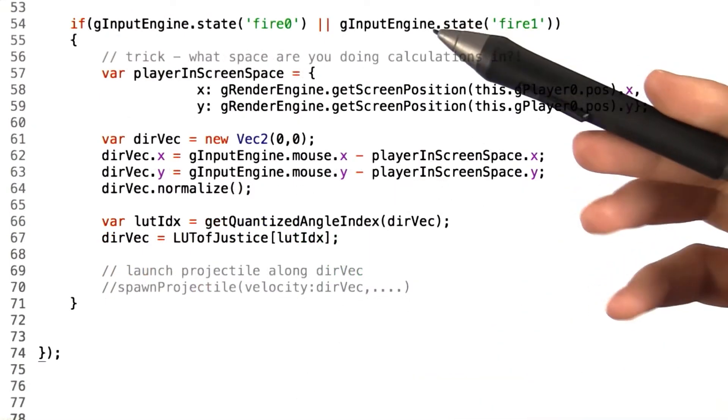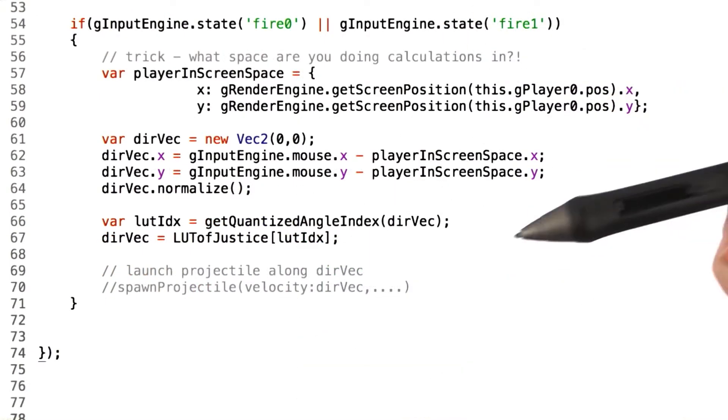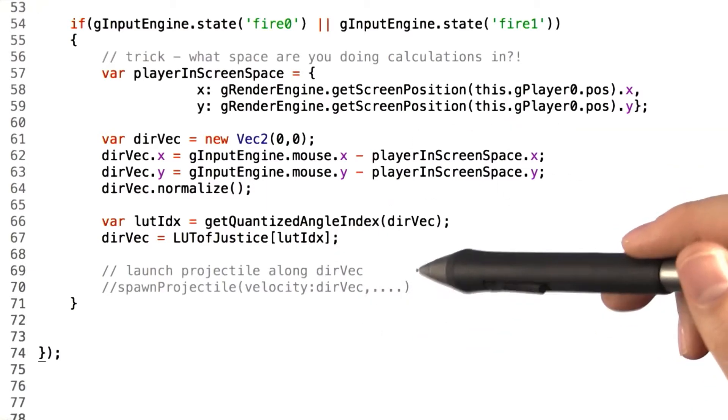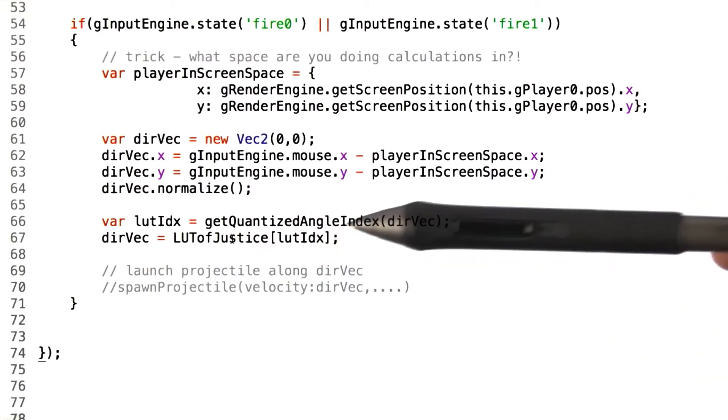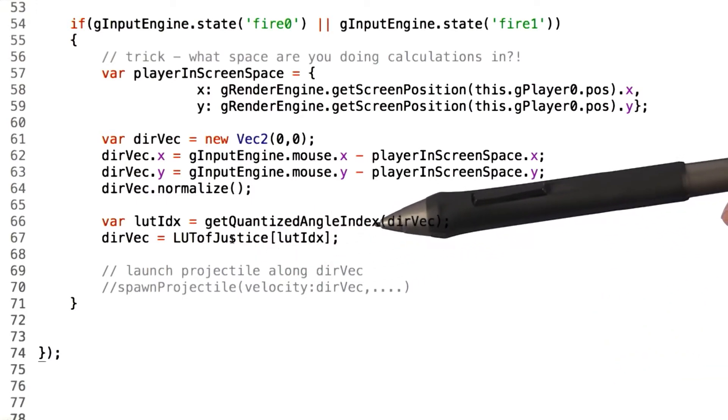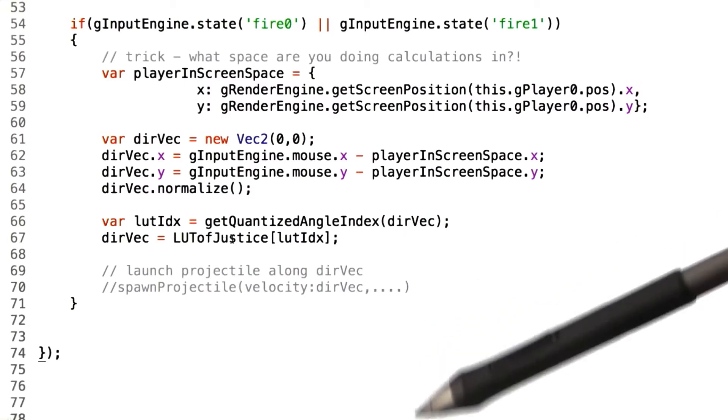Now, in order to snap the arbitrary directional vector that we're getting from mouse input to one of our eight directional values that a keyboard player can use, we are going to utilize a lookup table. This lookup table is already populated to contain the eight directional vectors unitized that keyboard players have access to.